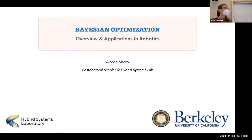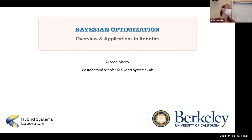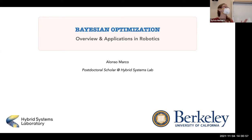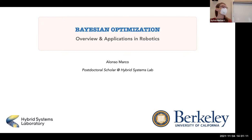He's worked a lot at the intersection of controls and learning, particularly applied to robotic systems — thinking about data-driven analysis and control, how to reason about risks and safety when exploring in simulation, and when taking something learned in simulation into the real world on real platforms. Today he's going to talk about his area of expertise: Bayesian optimization and the exploration-exploitation trade-off. With that, I'll pass it over to Alonzo.